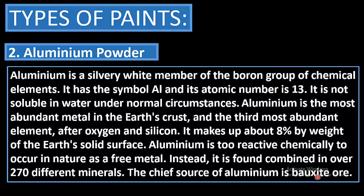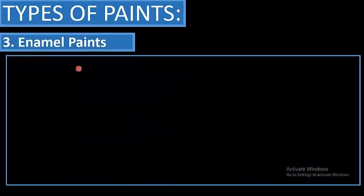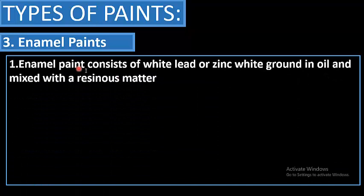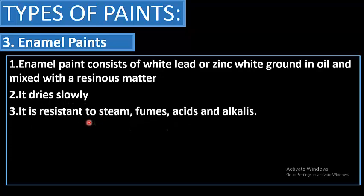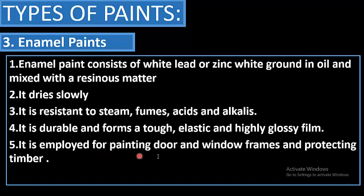The third type is enamel paints. Enamel paint consists of white lead or zinc white ground in oil and mixed with a resinous matter. It dries slowly, is resistant to steam, fumes, acids, and alkalis. It is durable, forming a tough, elastic, and highly glossy film. It is used for painting door and window frames and protecting timber.